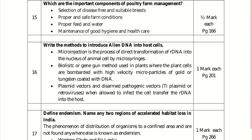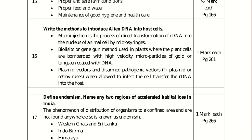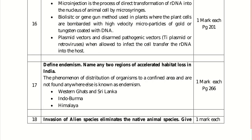Define endemism and name any two regions of accelerated habitat loss in India. The phenomenon of distribution of organisms confined to a particular area and not found anywhere else is known as endemism. The two regions of accelerated habitat loss in India are the Western Ghats and Sri Lanka, and the Himalayan or Indo-Burma region.